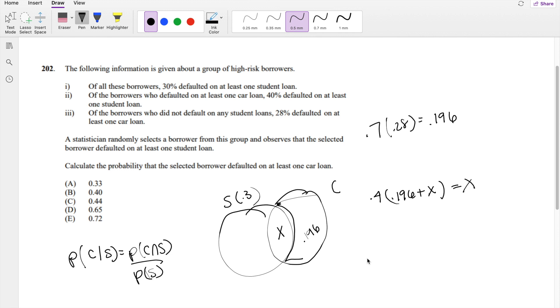So what's 0.196 times 0.4? That's equal to 0.0784 plus 0.4X is equal to X.